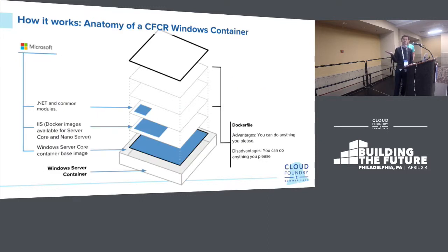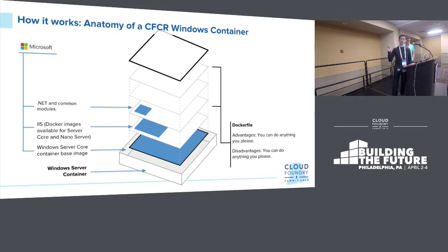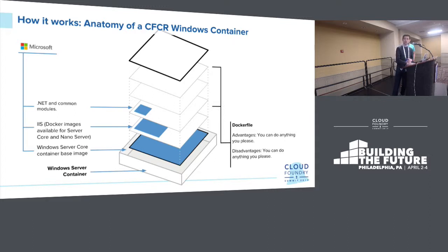The anatomy of a Windows container on CFCR is pretty much whatever you put in your Dockerfile, as opposed to something more opinionated like CFAR. A lot of Docker base images are already available from Microsoft, including images with IIS that run either on Windows Server Core — the big container image containing the Win32 subsystem able to run full .NET framework — or Nano Server, about a 90 megabyte base image designed to run Windows binaries or self-contained applications. The advantages of a Dockerfile let you run things as container admin and configure things at will, though that's also a disadvantage.